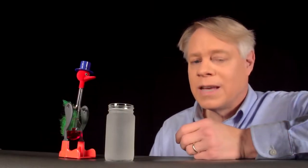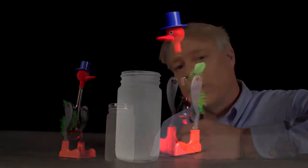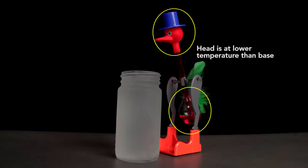To an engineer, this bird is a heat engine. A heat engine turns heat differences into work, mechanical motion. To see that, recall that when the bird is just about to drink, that its head is at a lower temperature than its base, which is at ambient temperature.